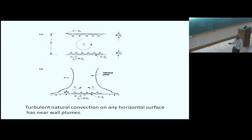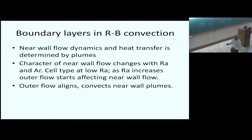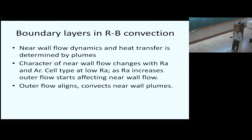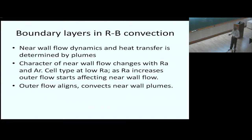In Rayleigh-Bénard convection you have two plates with an outer flow between them, and plumes on either plate. The flow dynamics and heat transfer are determined by plumes, but the character of the near-wall flow can change with Rayleigh number and aspect ratio. At low Ra you get a cell-type structure, and as Ra increases the outer flow strengthens and starts affecting the plumes — it can either align them in the flow direction or convect them.